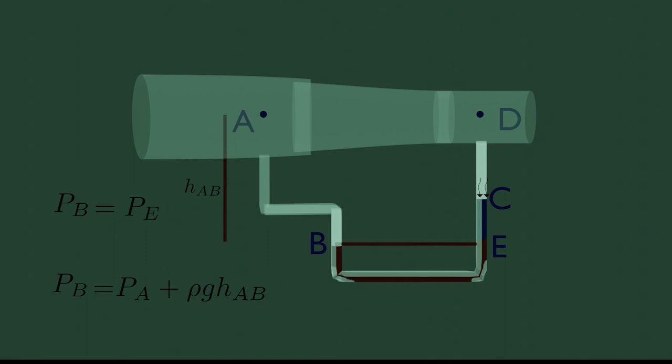Similarly, pressure at E is air pressure at D, plus static air pressure of height HCD, plus static pressure height of blue liquid HBC, where rho is density of blue liquid.